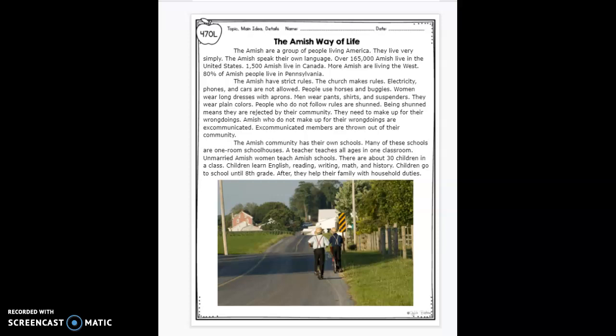Excommunicated members are thrown out of their community. The Amish community has their own schools, and many of these schools are one-room schoolhouses. A teacher teaches all ages in one classroom. Unmarried Amish women teach Amish schools. There are about 30 children in a class. Children learn English, reading, writing, math, and history. Children go to school until 8th grade.